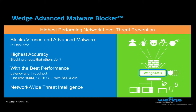Wedge AMB inspects all inbound and outbound traffic, including SSL-encrypted traffic, to detect and block both conventional and highly advanced viruses and malware in real-time. The compelling thing about Wedge AMB is the ability to do so with the highest threat detection accuracy available in the industry, blocking threats in real-time that other systems will miss — with imperceptible latency and unrestrained throughput. Our 100 megabit, 1 gigabit, and 10 gigabit per second systems will operate at full line-rate capacity with anti-malware and SSL inspection active.